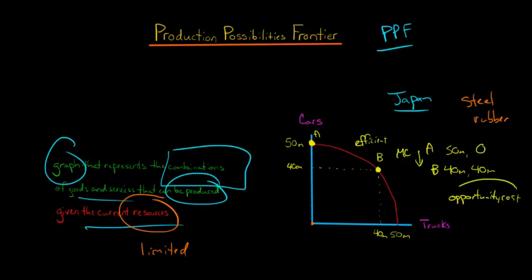Thinking in terms of opportunity cost and marginal cost — as we go along this curve, the marginal cost will be increasing. What I mean is: to go from 50 million to 40 million cars, we give up 10 million cars but get 40 million trucks. But if we want to go to 50 million trucks, we now have to give up 40 million cars. So the marginal cost to go from 40 million trucks to 50 million trucks — getting an extra 10 million trucks — requires giving up 40 million cars. The marginal cost is increasing, and that's why we have the bowed-out shape of the PPF.